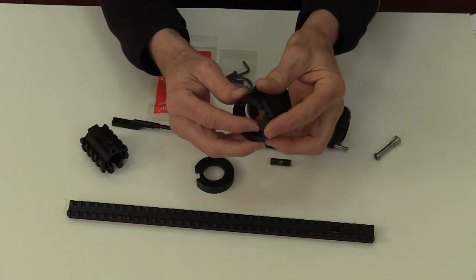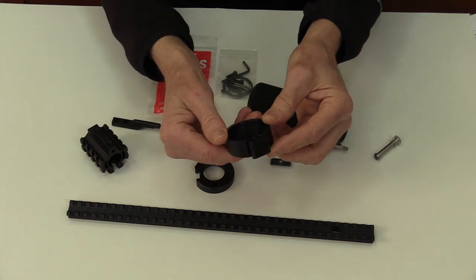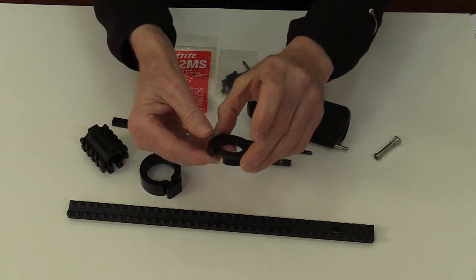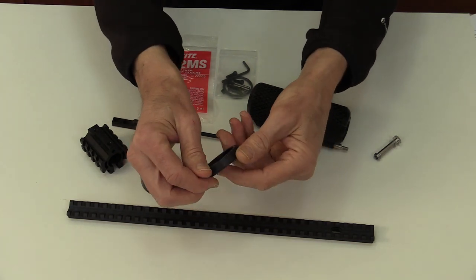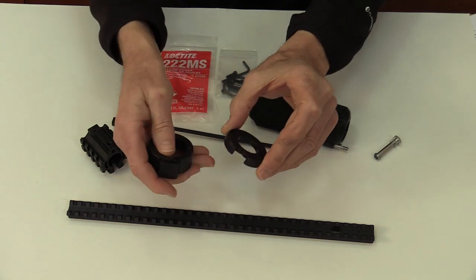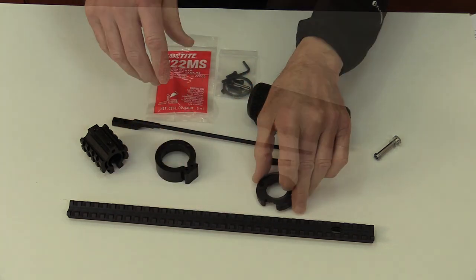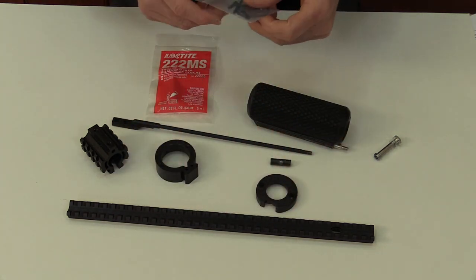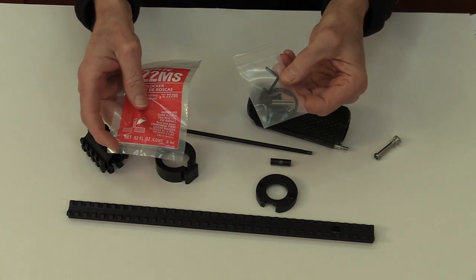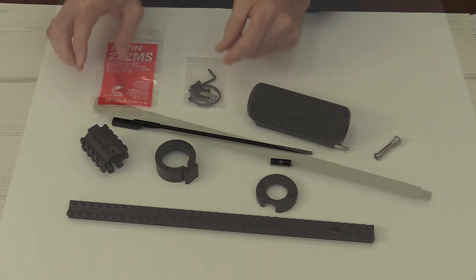An aft support for supporting the rear end of the picatinny rail. An aft support cover to hide the barrel nut and several miscellaneous screws, a snap ring, a tube of thread locker, and a metric allen wrench.